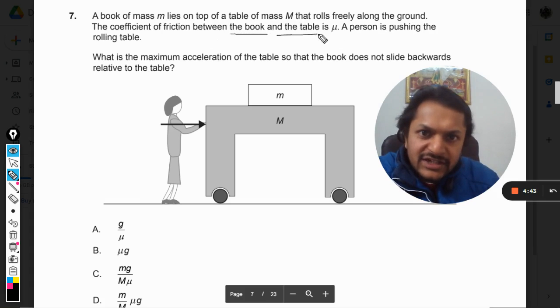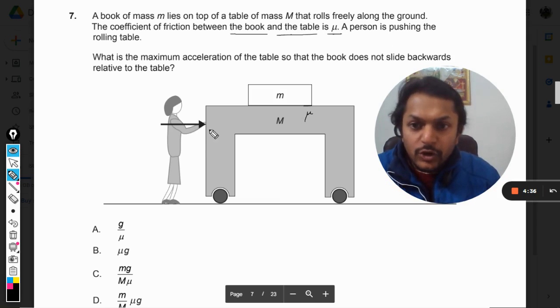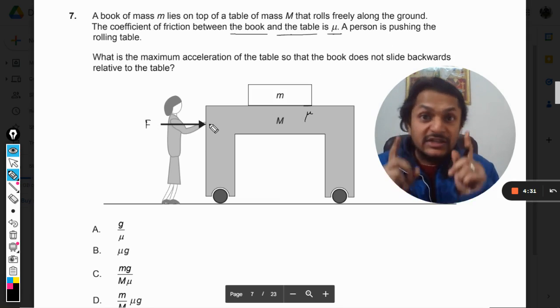A person is pushing the rolling table. Let's say the force applied is F, and you are not pushing the book—the person is pushing the table.